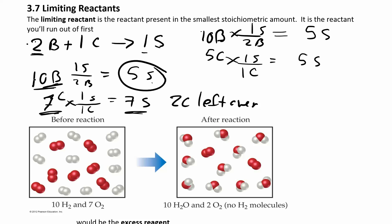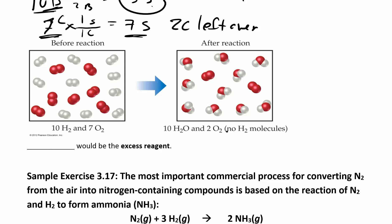The rule is: take each reactant, compare it to the products, and whichever one gives you the smaller amount of product is the limiting reactant. There's also a visual example with hydrogen and oxygen making water — hydrogen is white and oxygen is red. On the product side there's leftover oxygen, so hydrogen is the limiting reactant. Once all the hydrogen is used up, the reaction is over and the excess oxygen remains.